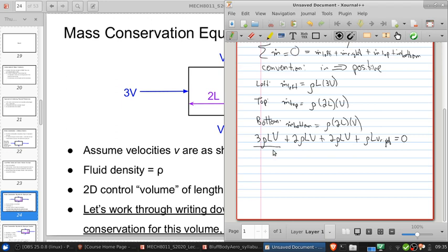This is from the left, top, and bottom. The rho's all cancel and the L's all cancel. So V right equals negative 7V.